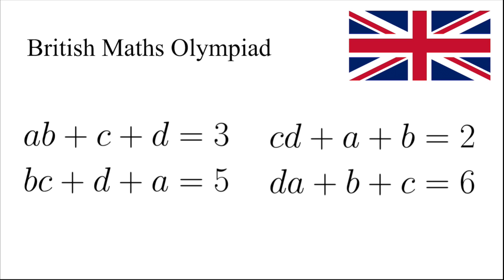In this video, we are going to find real numbers a, b, c, and d, such that ab plus c plus d equals 3, bc plus d plus a equals 5, cd plus a plus b equals 2, and da plus b plus c equals 6.